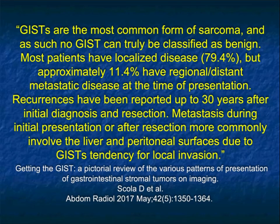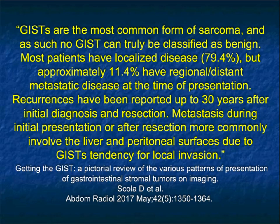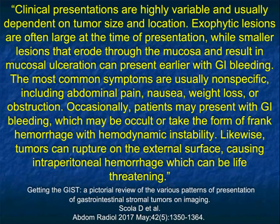GISTs are the most common form of sarcoma, and as such, GISTs can never really be classified as truly benign. Path reports on lesions under 5 centimeters often say the lesion looks benign but needs to be followed, because they can eventually become malignant. Most patients have localized disease, but about 11.4% have regional and distant metastasis at presentation. Recurrences have been reported up to 30 years after initial diagnosis. Metastasis most commonly involves the liver and peritoneal surface.